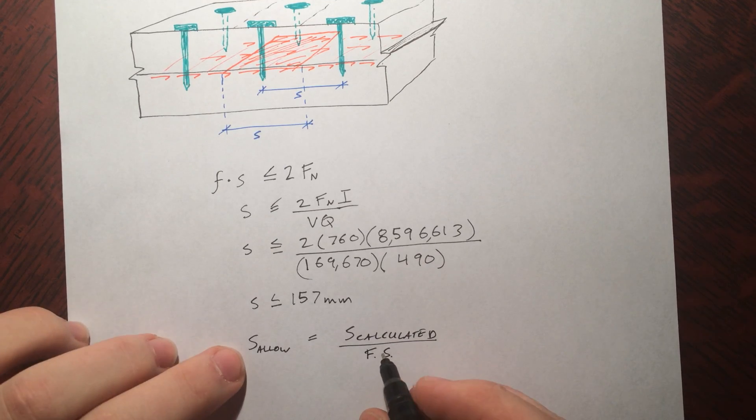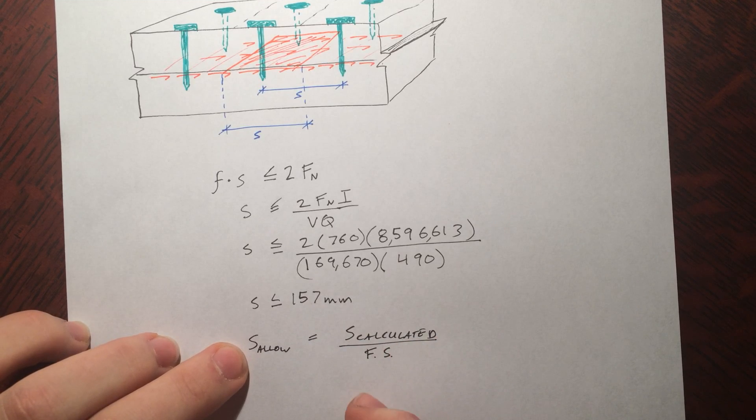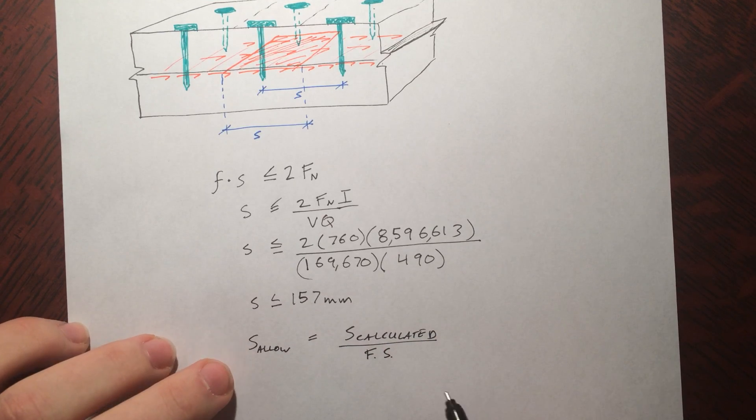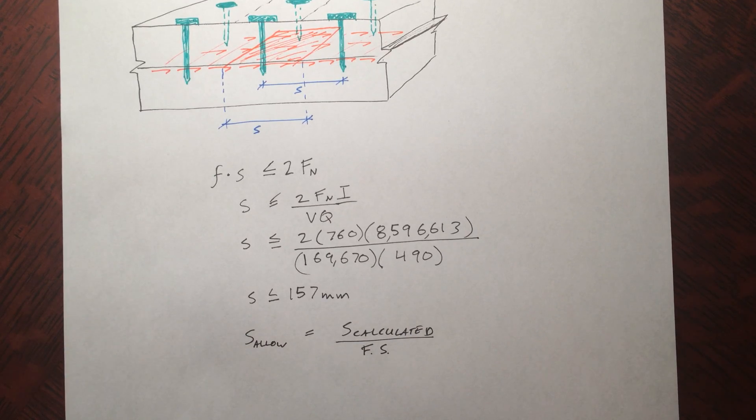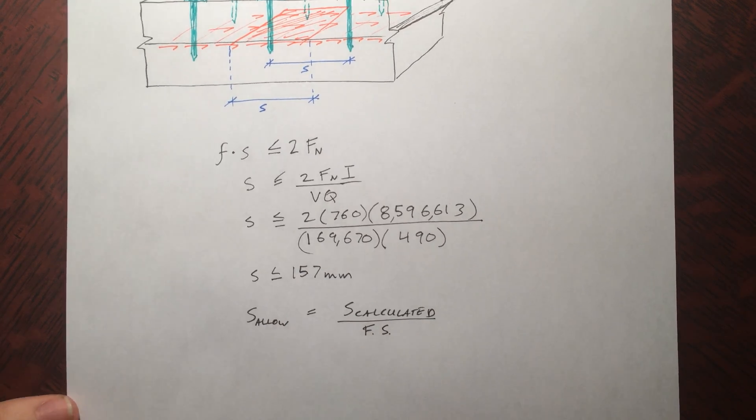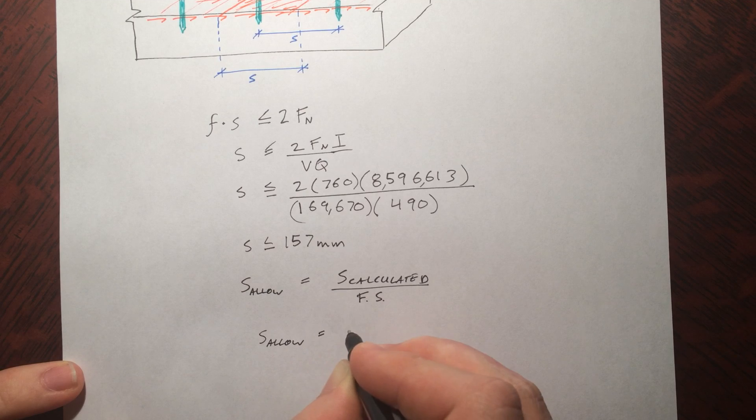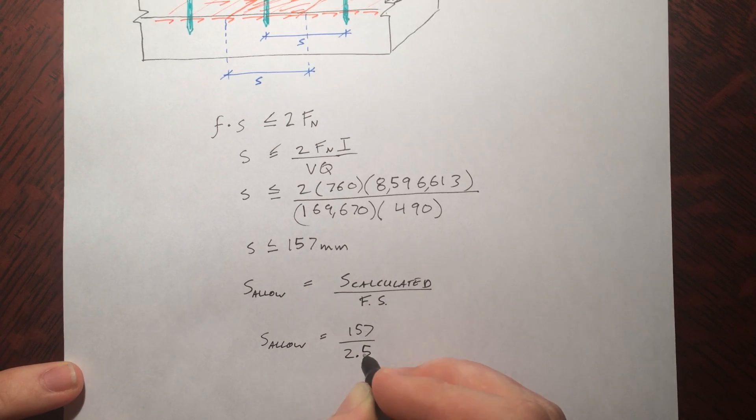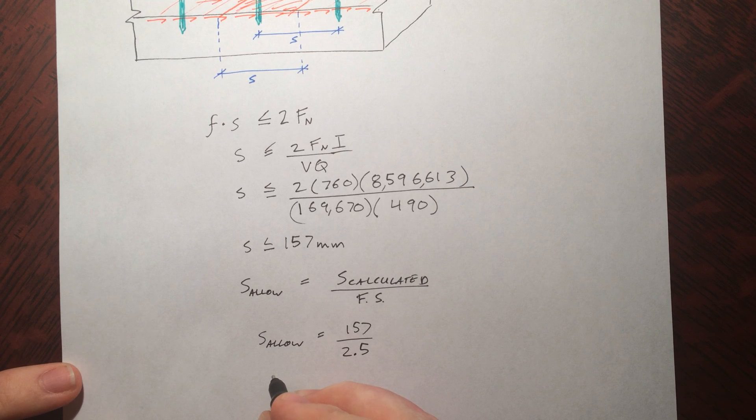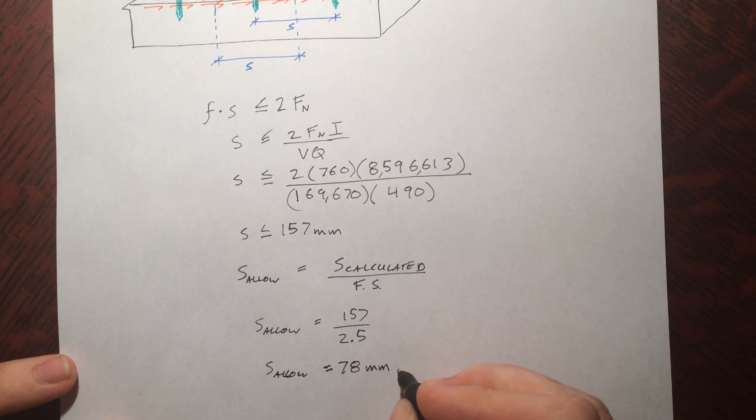And of course you can rearrange this, usually you give it factor of safety is equal to something over the allowable, so calculated over allowable, or like given over max, or whatever. But basically what you get over the factor of safety is what you want. So putting this in here, 2.5 was our factor of safety, S allowable, or we can write approximately 3.1 inches.